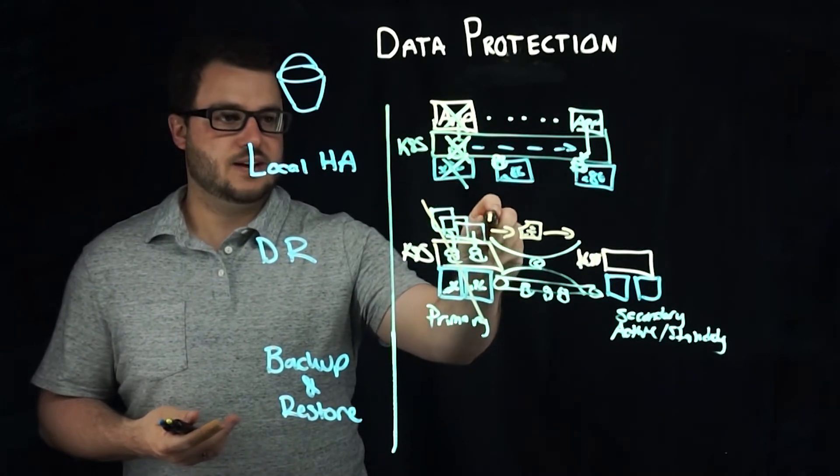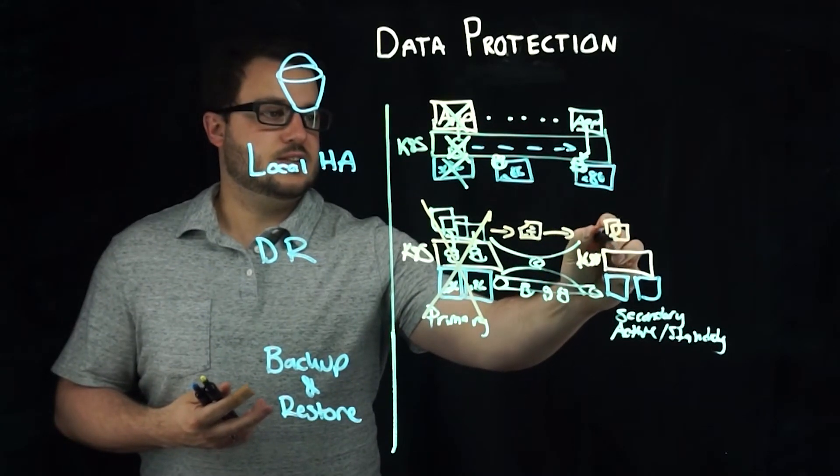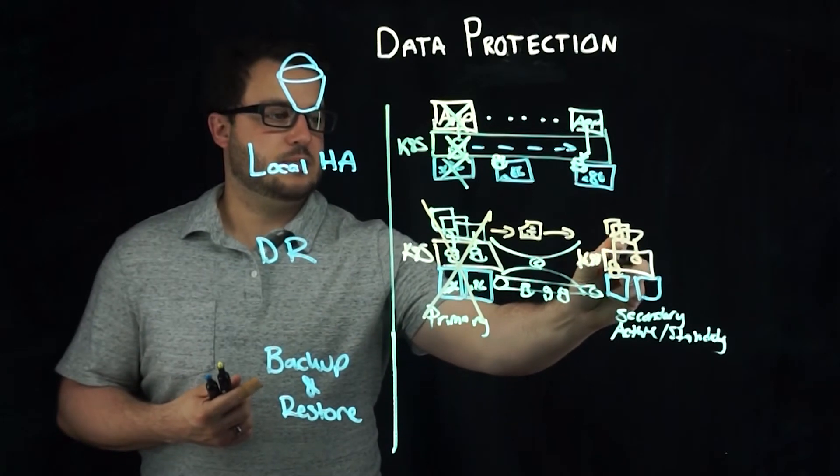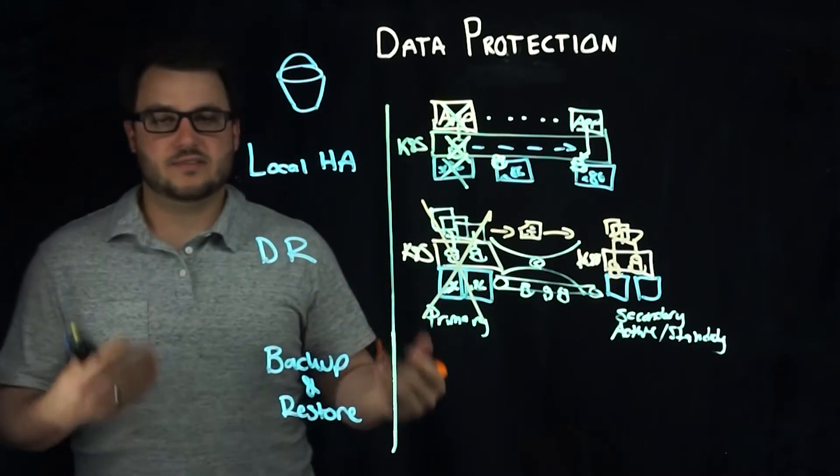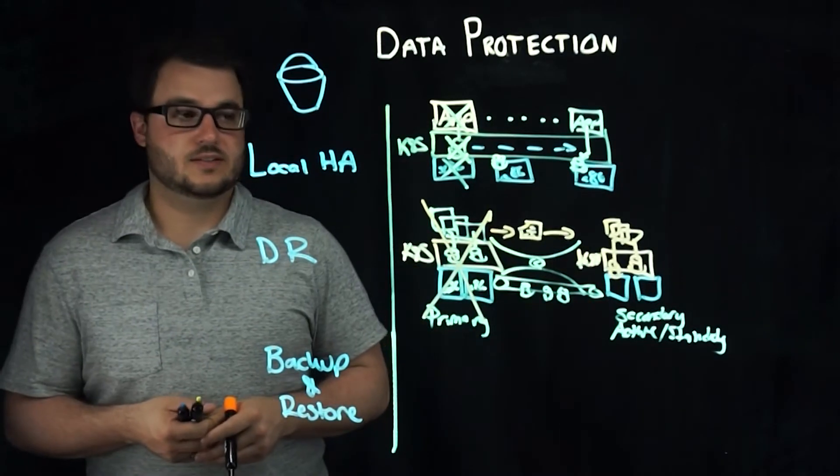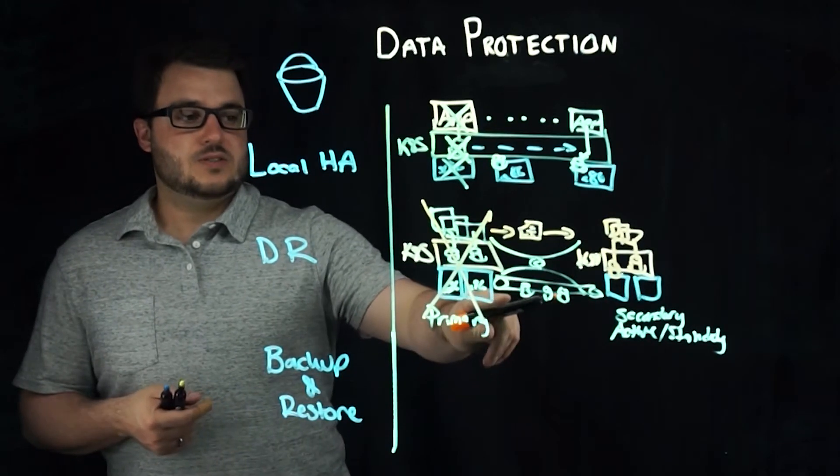So what happens is if this whole data center goes down, then automatically these get turned on, the data is already there, and the applications basically have an RTO that's as fast as the scheduler can turn on those applications in the other application site.